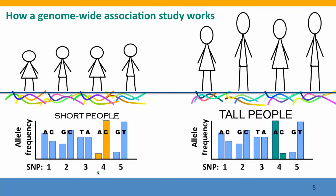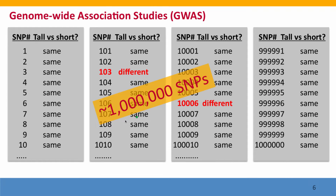This is an extreme case. We do this for all million of our SNP positions, using careful statistical analysis to decide how different the frequencies have to be to count as different, flagging positions where the short people and the tall people have different allele frequencies. Then we take this data over all million SNPs across all 23 chromosomes — the whole genome — and look for places where the differences are strong enough that they're not likely to be due to just random fluctuations in sampling.